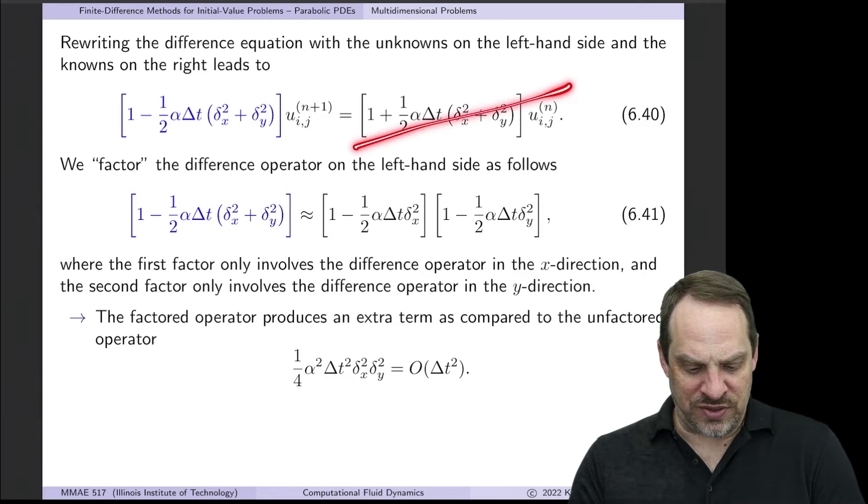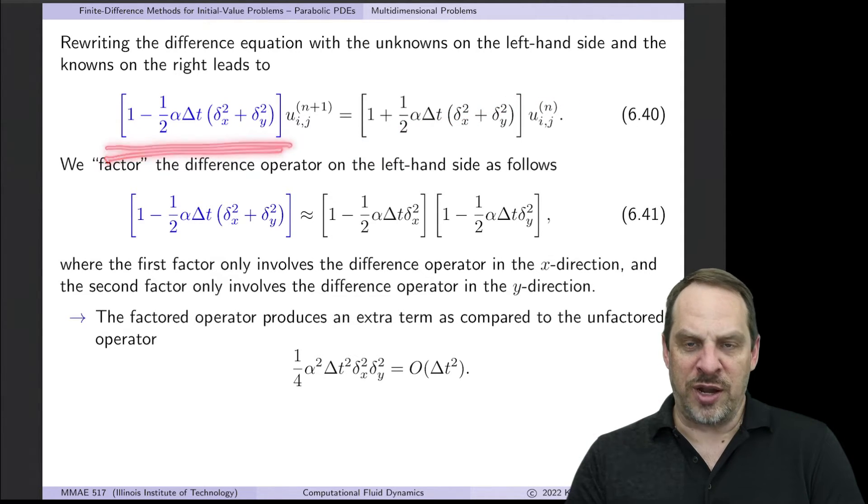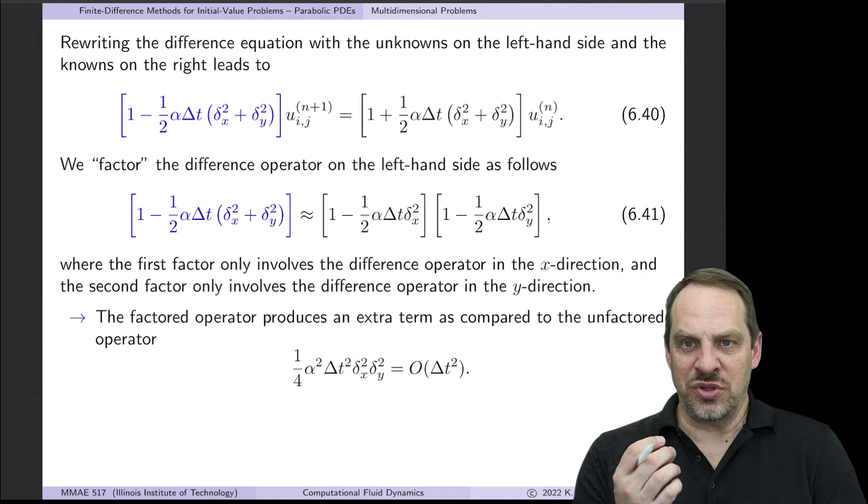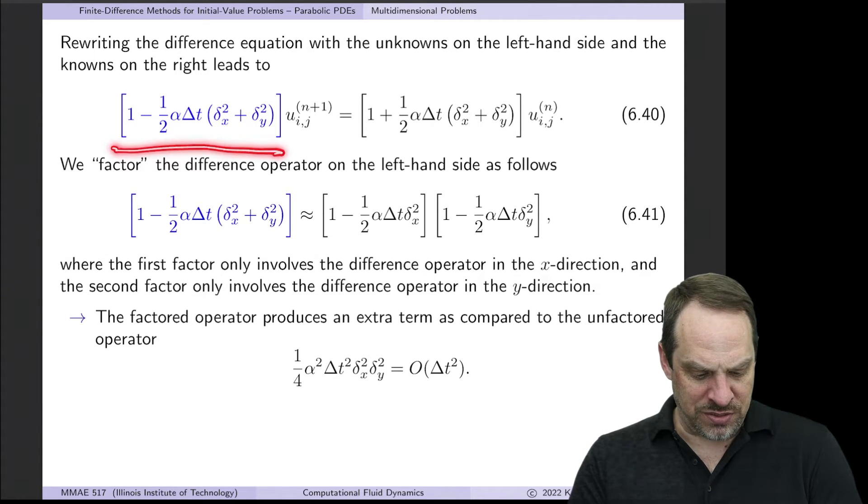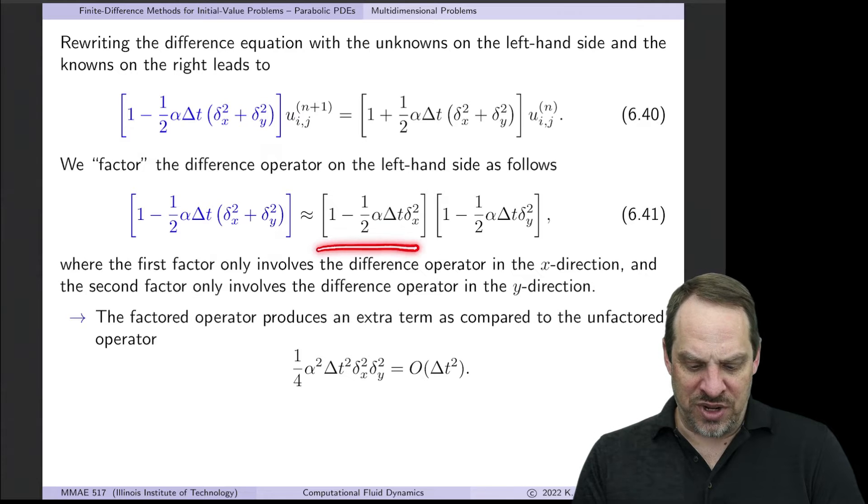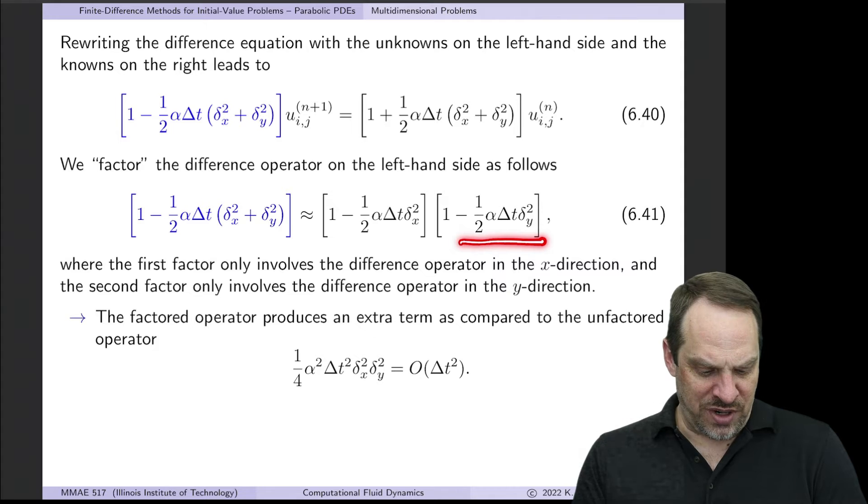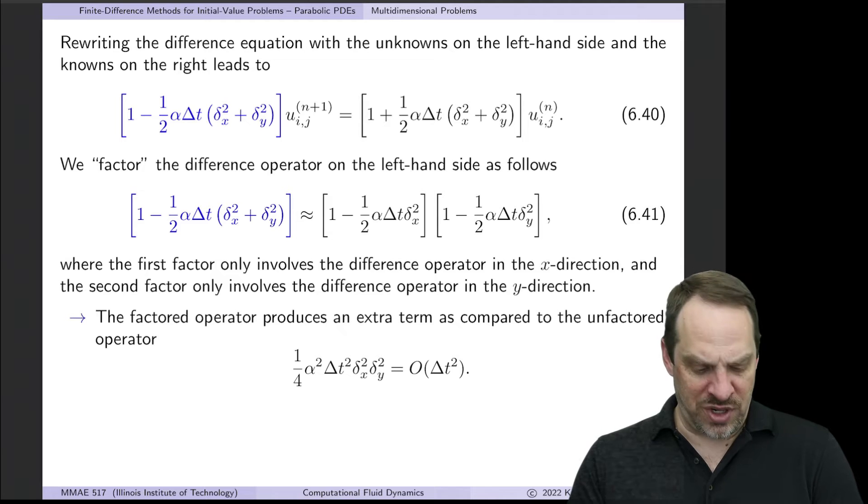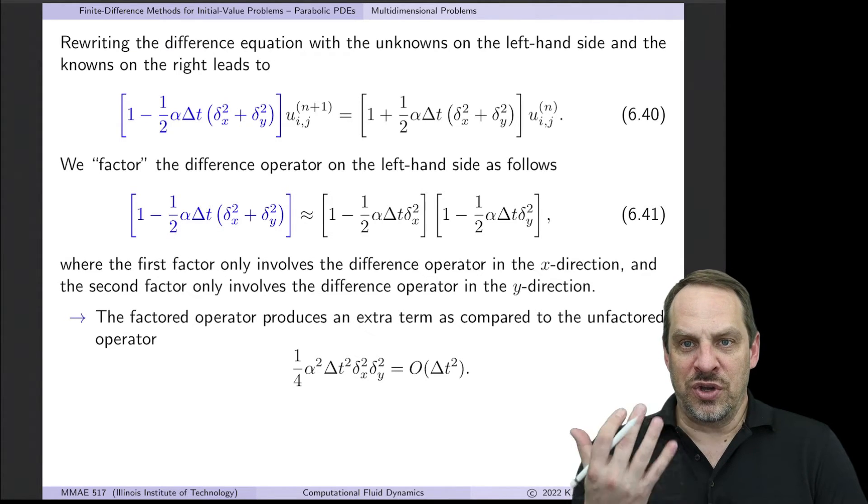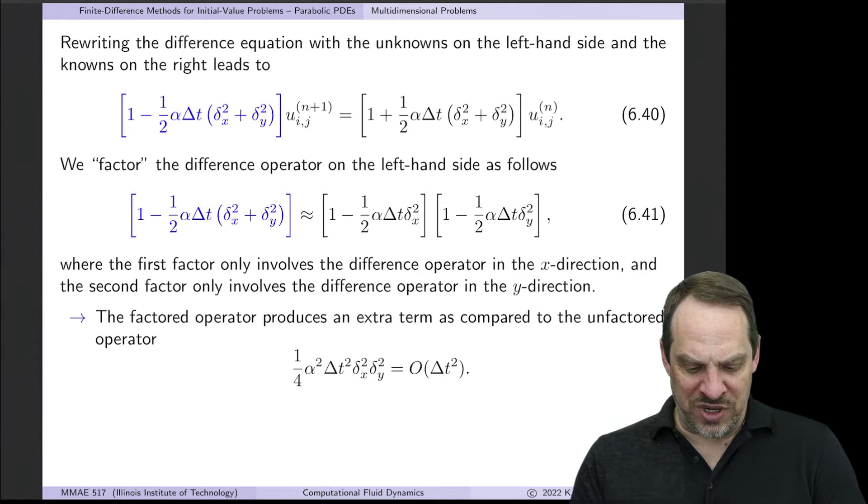Now forget about this right-hand side for a moment. Let's just look at this blue operator on the left. This is a finite difference operator, and what we're going to do is we're going to factor it. It's a factored ADI. So this is how we factor it. So this operator right here, I'm going to factor it into the product of these two factors. So you'll notice 1 times 1, well that's equal to 1. 1 times this minus a half alpha delta t delta_y squared, well that you see here. And then the 1 times minus a half alpha delta t delta_x squared, well you see that right here.